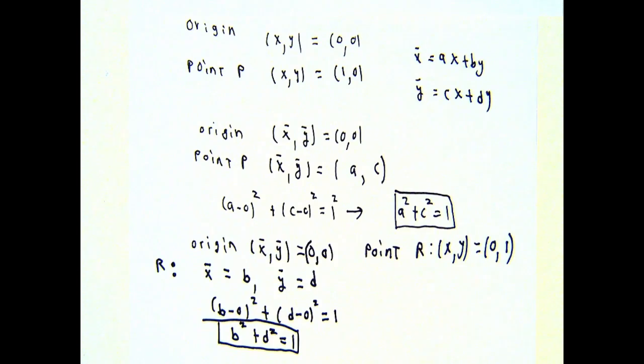Do the same kind of thinking, except let the point be R. R is going to have x equals zero and y equal one. Calculate the x-bar and y-bar coordinates, b and d here. b squared plus d squared is the square of the distance from the origin to point R. That's one. So I have another formula that relates these coefficients in my transformation.